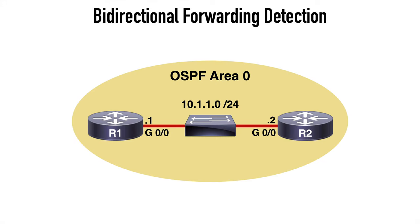Here we have a topology with two routers and between them a layer 2 switch, and these routers are OSPF neighbors with one another. Let's say that the physical interface between R2 and our layer 2 switch goes down. R2 will obviously tear down the OSPF adjacency based on this link failure. However, as far as R1 is concerned — at least for some time — the link between itself and the layer 2 switch is still functioning, so it has no awareness of the failure event on the other side of the switch.